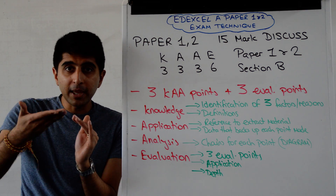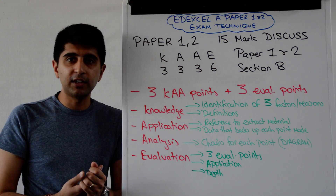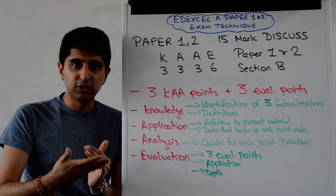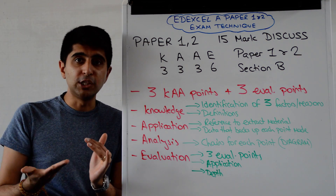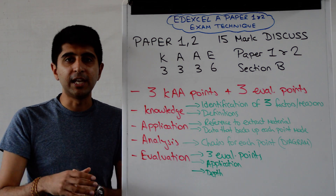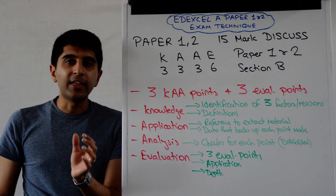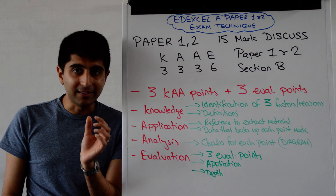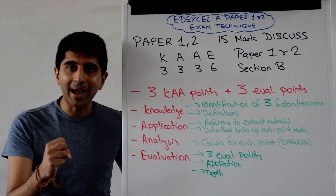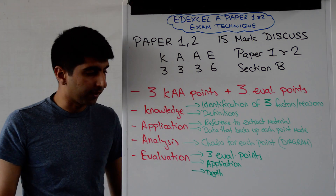For application, for each point that you're making — for each fact, for each reason, for each point you're trying to make — look for an application point to back up each one. The extract material will give you everything that you need, so hunt it down, quote it, use it. Just make sure that whatever you find in the extract material is explicitly relevant and explicitly useful to back up the point that you're trying to make. Then you get your application marks.